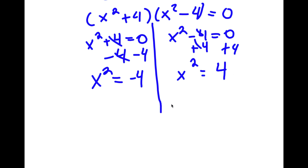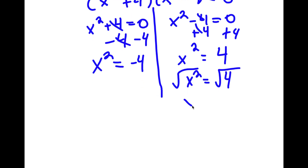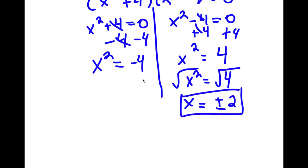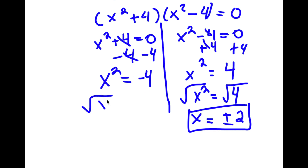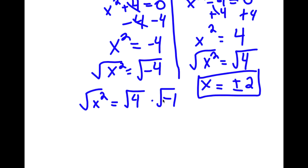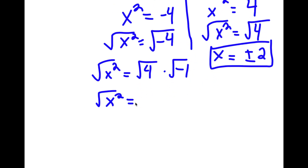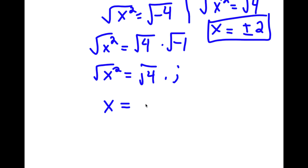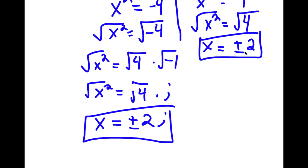For x² equals positive 4, we take the square root on both sides. The square root of x² is x, and the square root of 4 is positive or negative 2. For x² equals negative 4, I take the square root of both sides. I rewrite the square root of negative 4 as the square root of 4 times the square root of negative 1. The square root of negative 1 equals i, so the square root of 4 times i gives x equals positive or negative 2i.